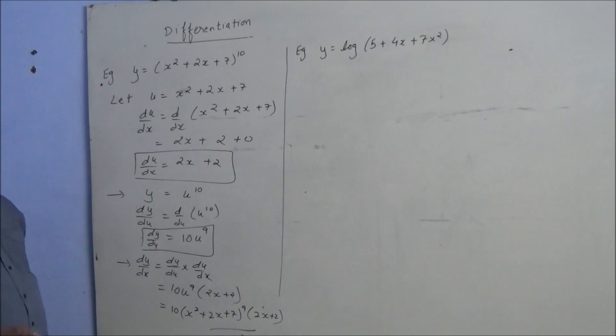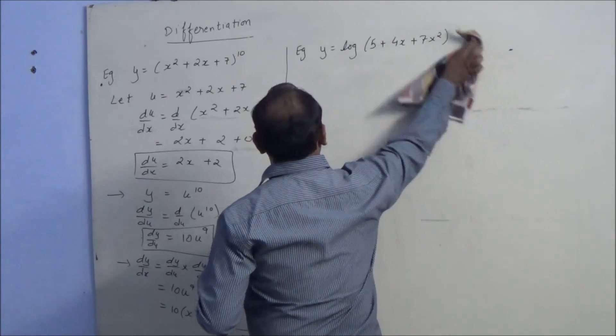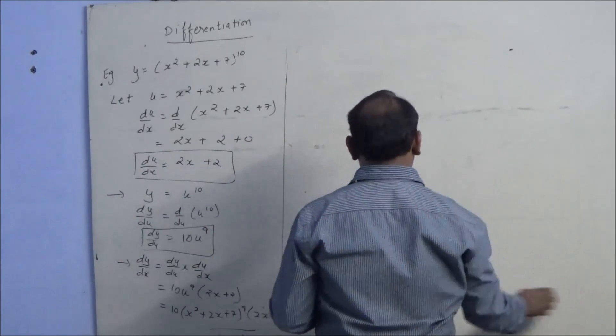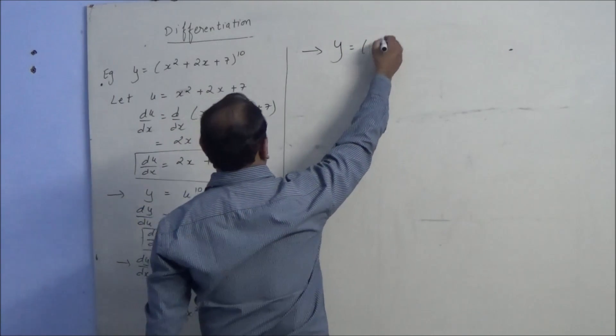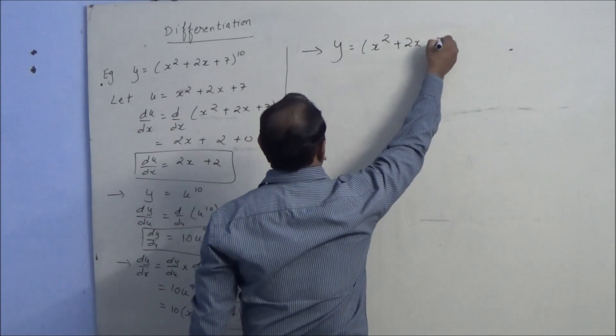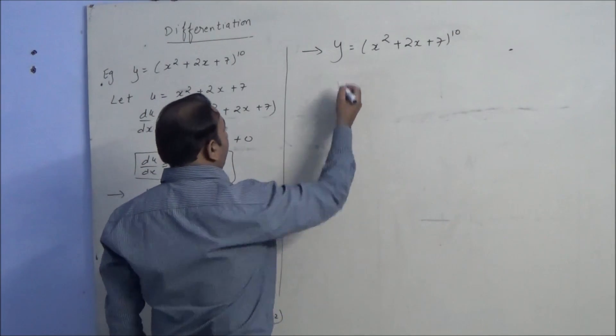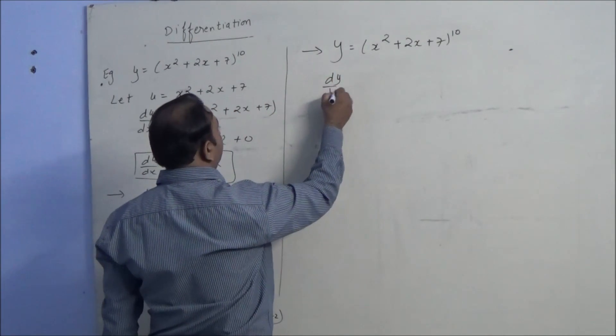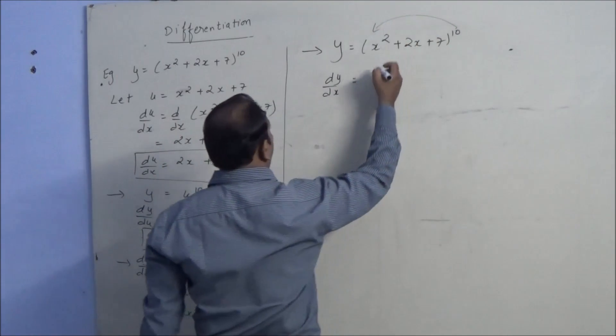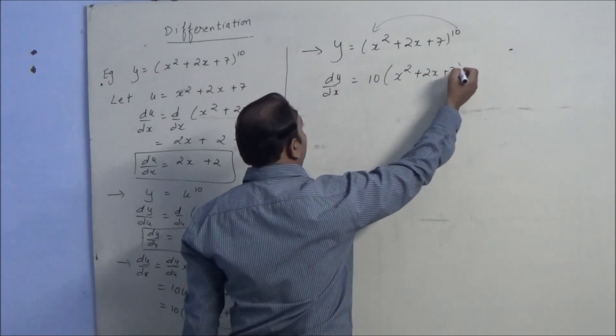This was by formula. Another way to do this, I write here. So again I do this sum with the shortcut method. We can directly find the derivative of this. Say dy by dx equals: you take this 10 over here in multiplication, 10 times x squared plus 2x plus 7 raised to 9, that is 10 minus 1.